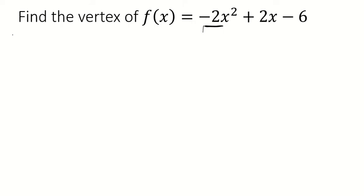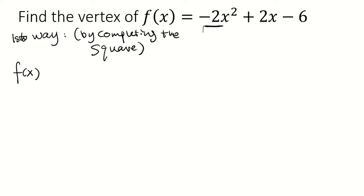First way is also by completing the square. So let me write down the function, f of x equals negative 2x squared plus 2x minus 6.